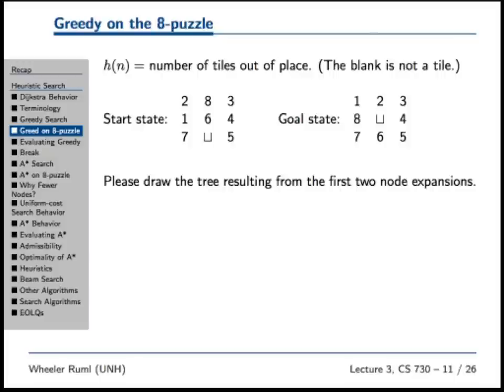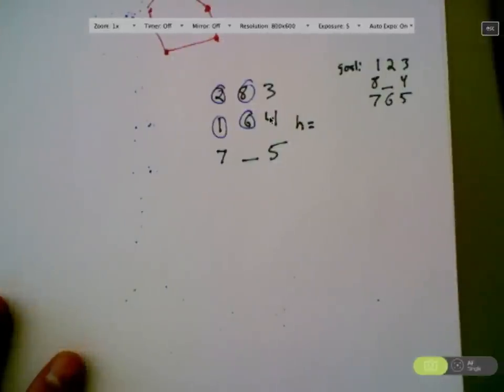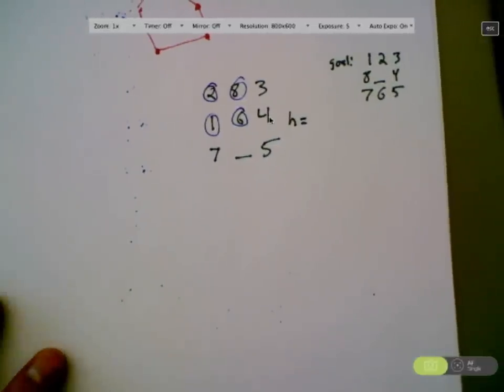So please draw the tree resulting from the first two node expansions if we're doing greedy search, greedy best first search on h. All right, that's enough. Let's see what we got here.